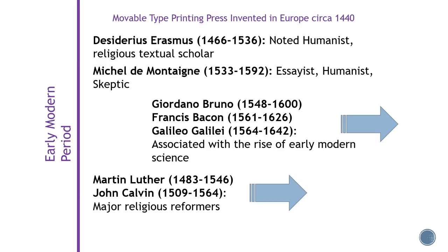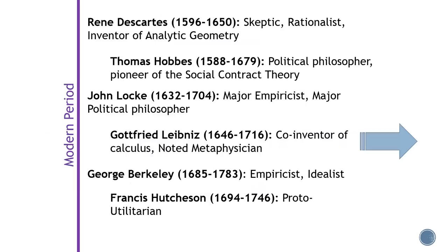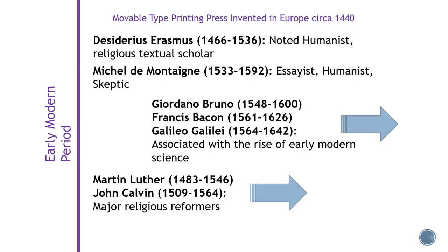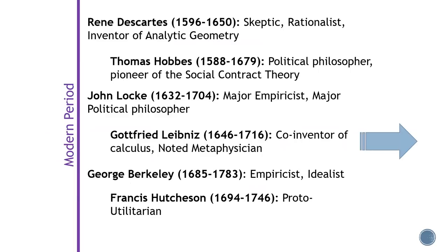Later in the modern period, we have people like Descartes, who did just about everything — he was a skeptic, a rationalist, and the inventor of analytic geometry, sometimes called Cartesian geometry. That's the stuff you learned in high school with X and Y coordinates, slope-intercept, and all that. Cartesian geometry — he invented that when he was about 17. We are dealing with a pretty high-level genius here.